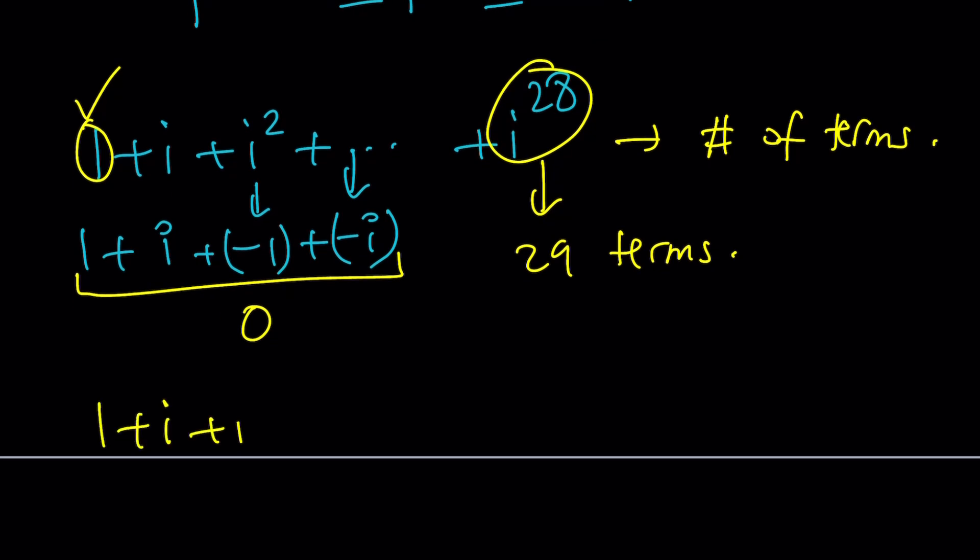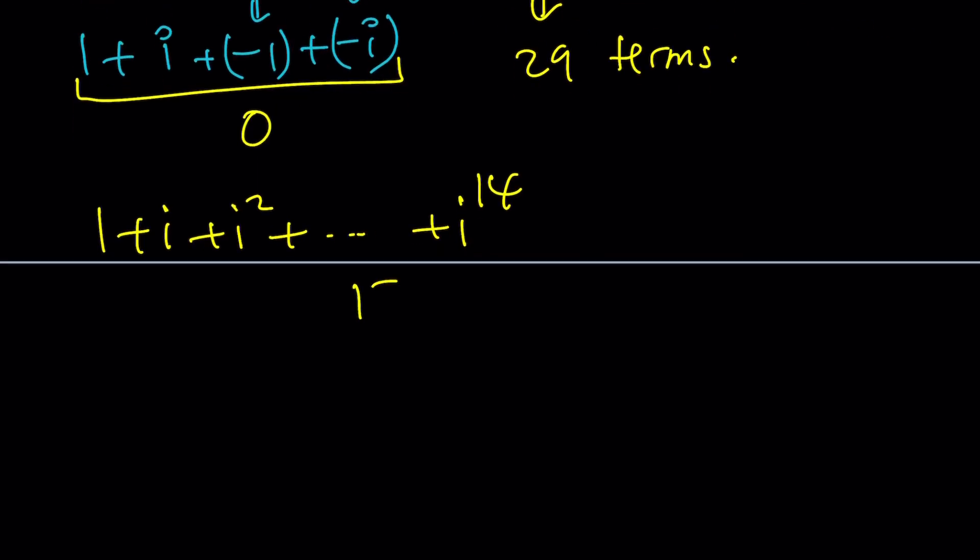But what about the denominator? So the denominator is a different ballgame. We're going to have to add all the way up to i to the power of 14. But this gives us 15 terms. So how many remaining terms are we going to have? Well, the closest multiple of 4 is 12. Because 3 times 4 is 12. So we're going to have 3 terms left over. And guess what? I'd like to pick the first 3 because I don't even see the last 3. I only see the last one because I didn't write it. I mean, come on. That makes sense, right? And i squared is negative 1. This gives us i as the sum of this finite series.